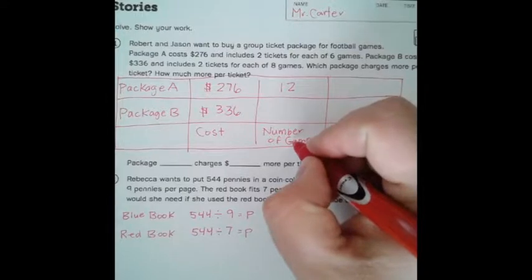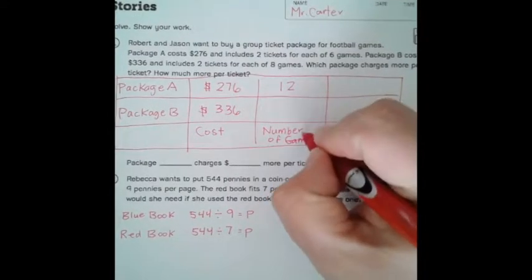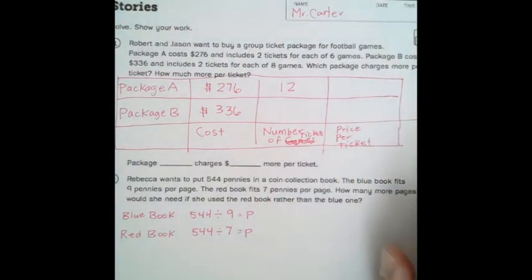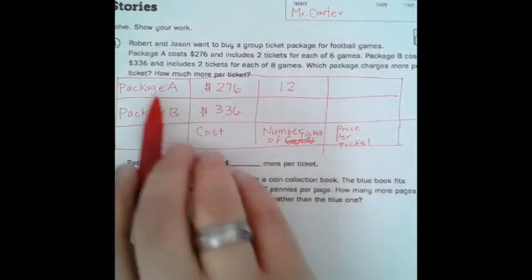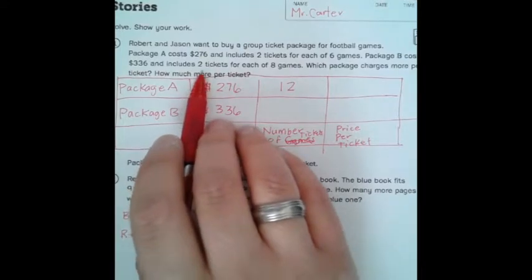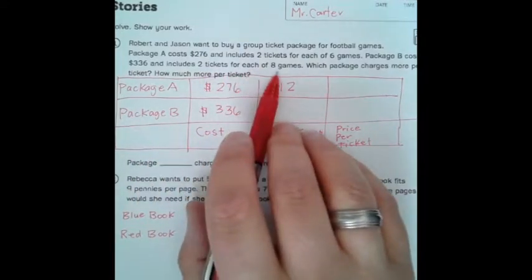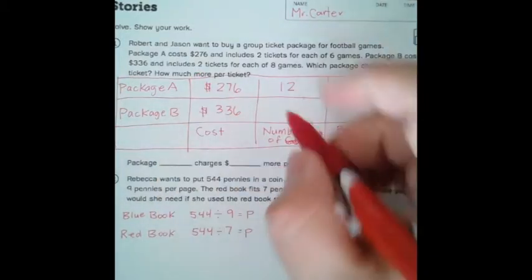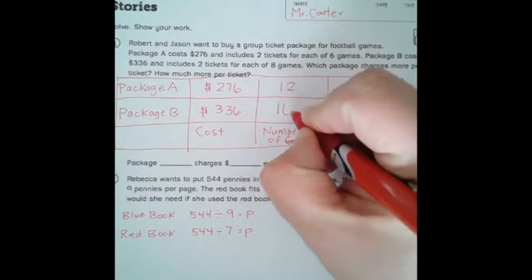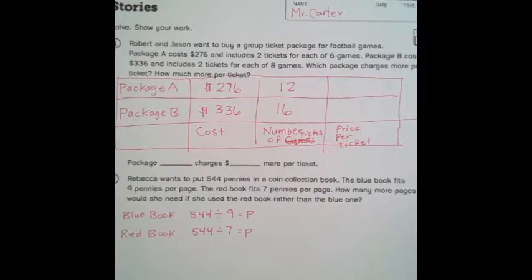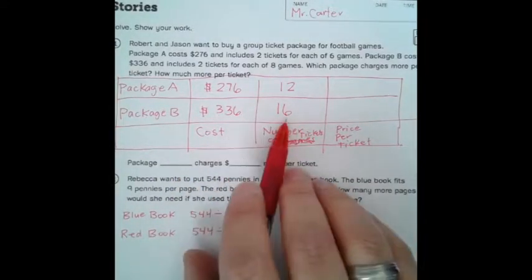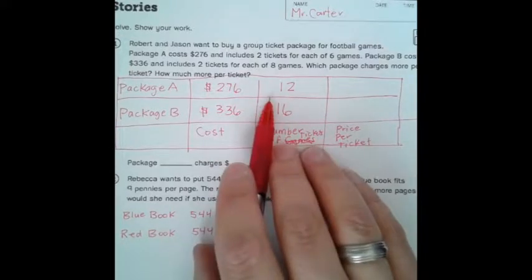So if you're going to six games and getting two tickets each, six times two, that's a total of 12 tickets. So that's the total of tickets. The number of tickets is 12. Now, package B includes two tickets for each of eight games. So, again, you're going to eight games and you're getting two tickets for each game. So that would be a total of 16 tickets for package B. So you're getting more tickets. It's costing you more money, but you're getting more tickets than package A.